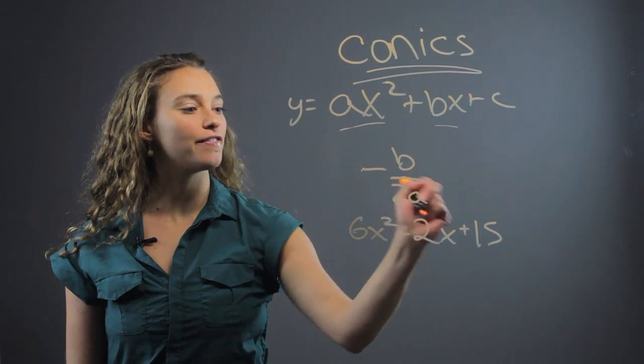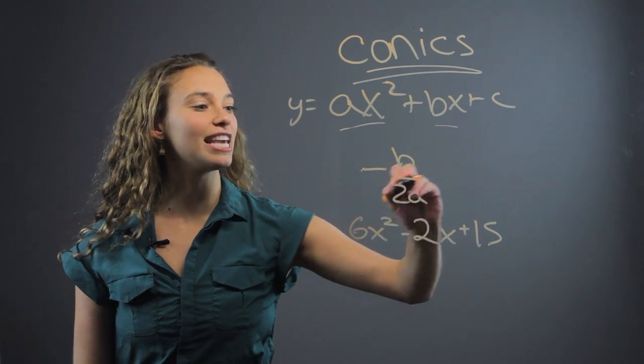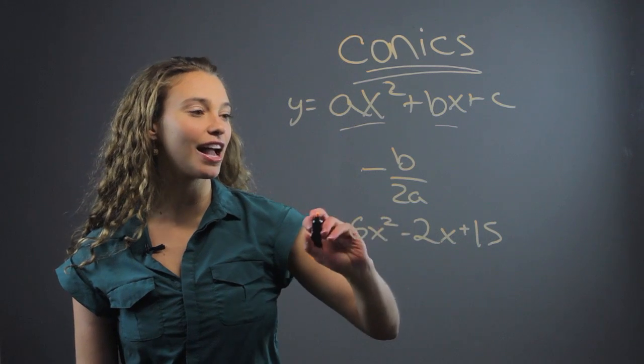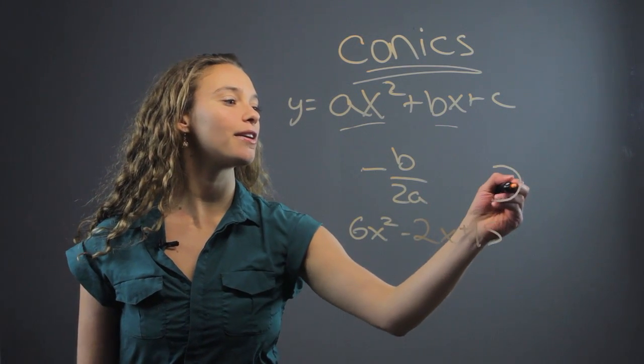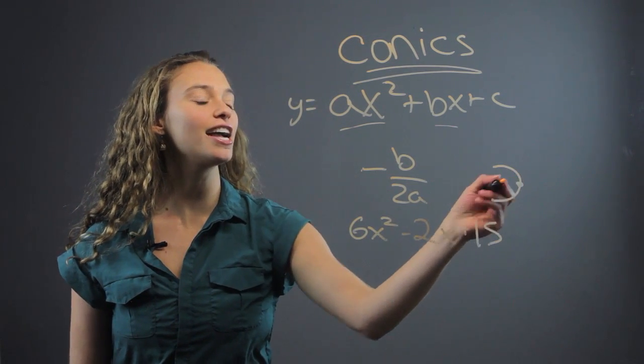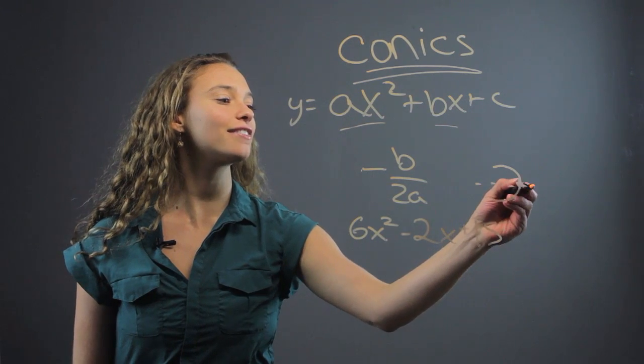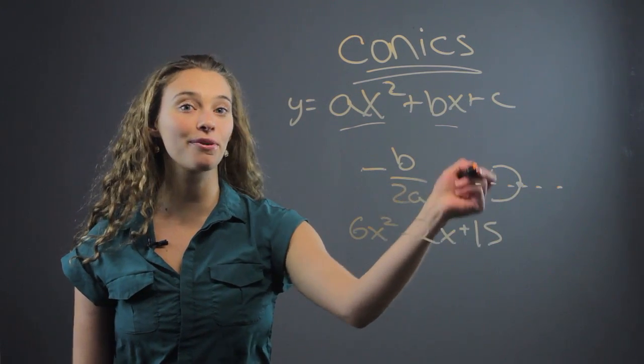The vertex of this parabola, which would also be the axis of symmetry, because if you have a parabola, this is the vertex, and then this is the axis of symmetry where you can reflect all those points across.